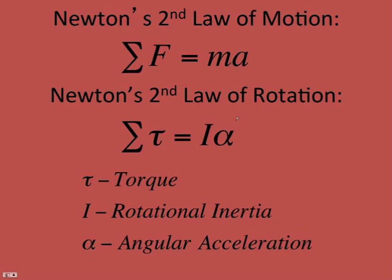We can use rotational analogs to cause motion. We have a force to cause rotation — we have a torque — so we replace force with torque. Resisting changes to motion is mass or inertia; resisting changes to rotational state is rotational inertia. And acceleration becomes angular acceleration. So the sum of the torques equals I·alpha. That is Newton's second law for rotation.